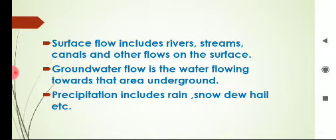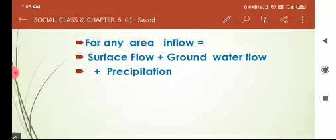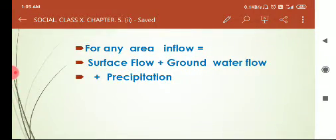Groundwater flow is the water flowing towards that area underground. Precipitation includes rain, snow, dew, hail, etc. These three sources — surface flow, groundwater flow, and precipitation — bring water towards an area, so together they are called inflow. For any area, inflow of water is estimated by adding surface flow plus groundwater flow plus precipitation.